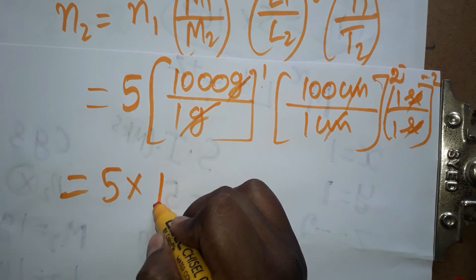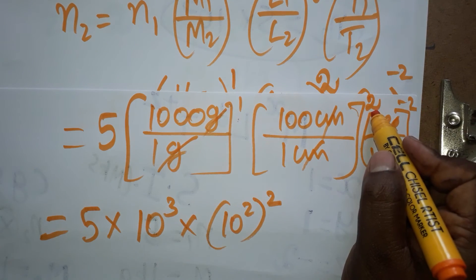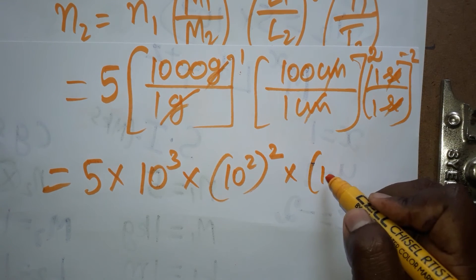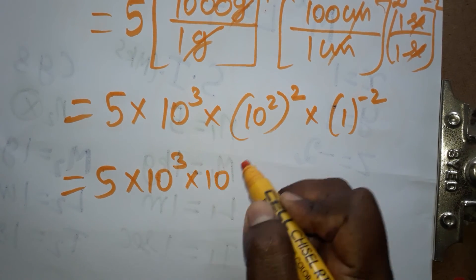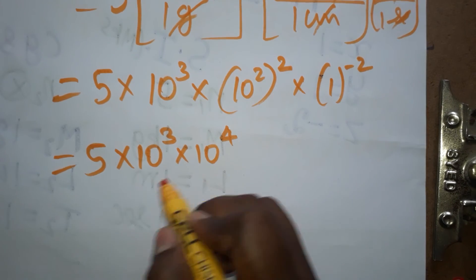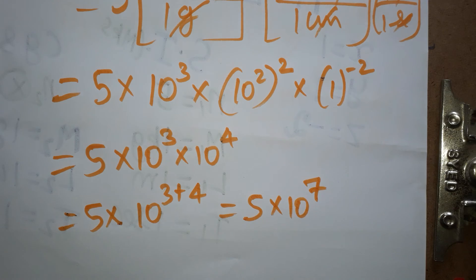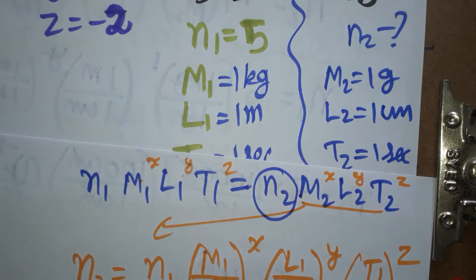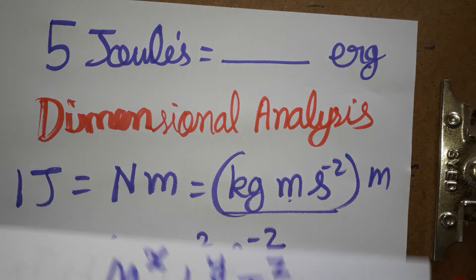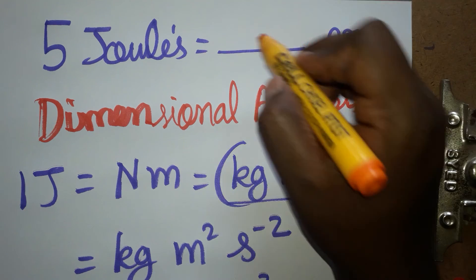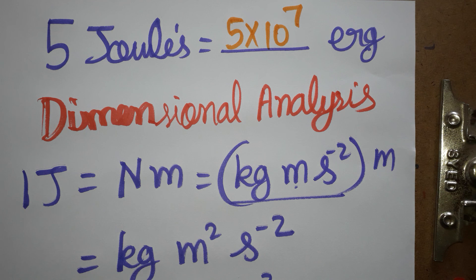Gram and centimeter units cancel after conversion. 1 kg = 1000 g = 10³, and 1 meter = 100 cm = 10², with that squared giving 10⁴. So the result is 5 × 10³ × 10⁴ = 5 × 10⁷. Therefore, 5 joules = 5 × 10⁷ ergs. Thank you for watching — please subscribe to my channel.